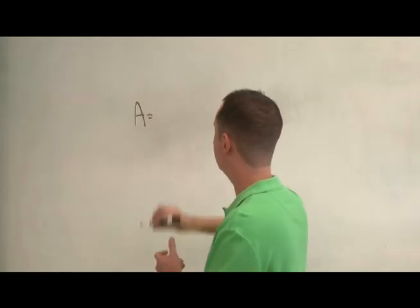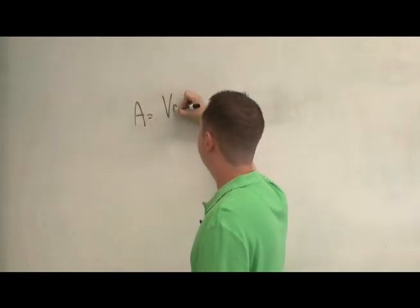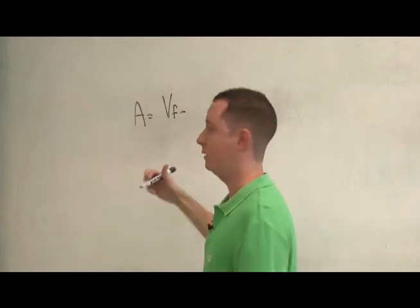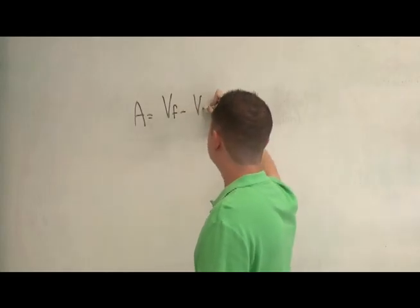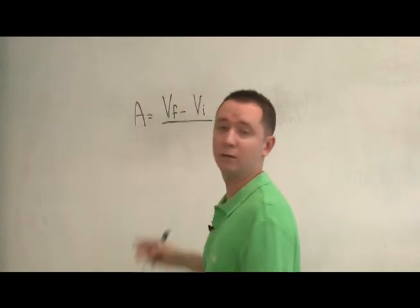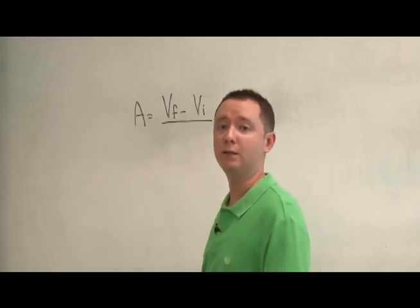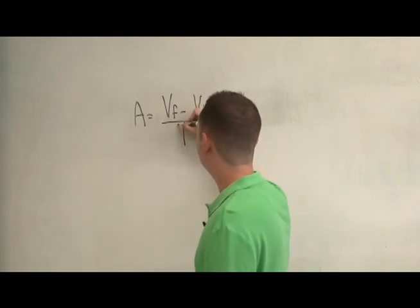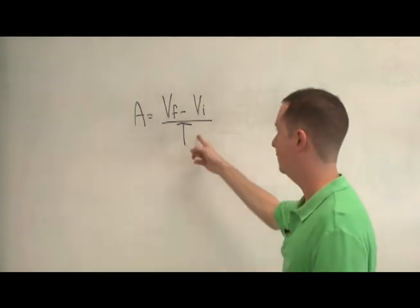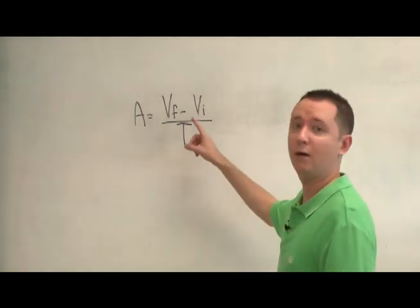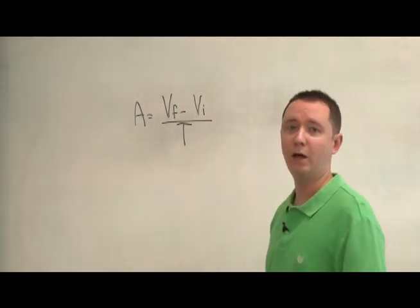so we'll abbreviate A for acceleration. A equals VF, standing for final velocity, minus VI, which stands for the initial velocity of the object, divided by the time T that it took to go from the initial to the final velocity.